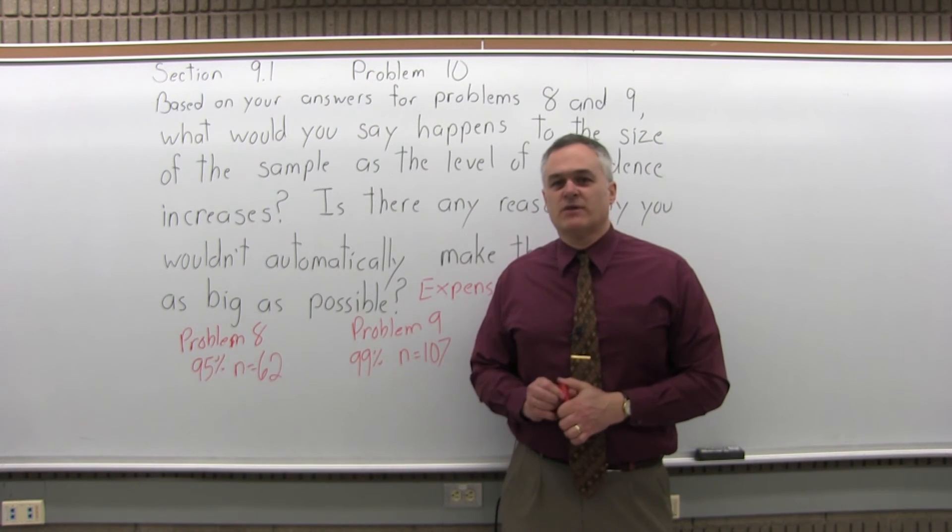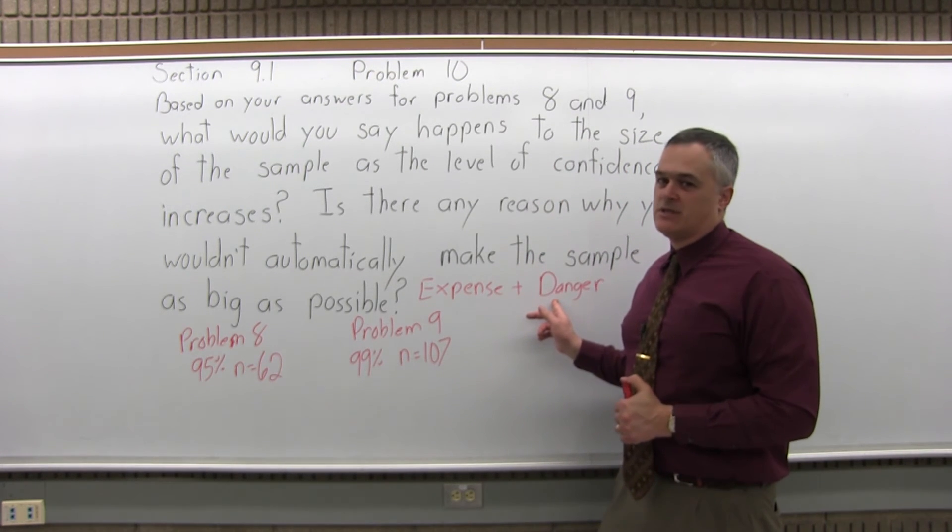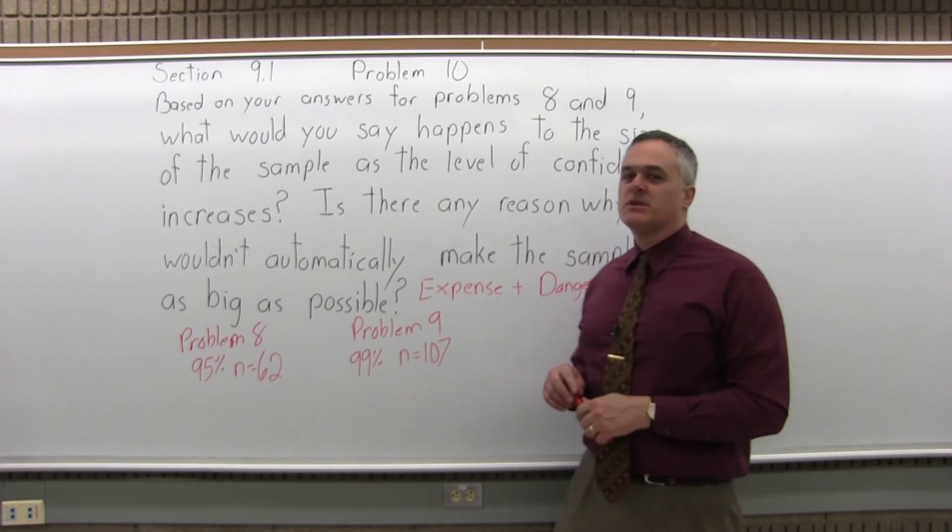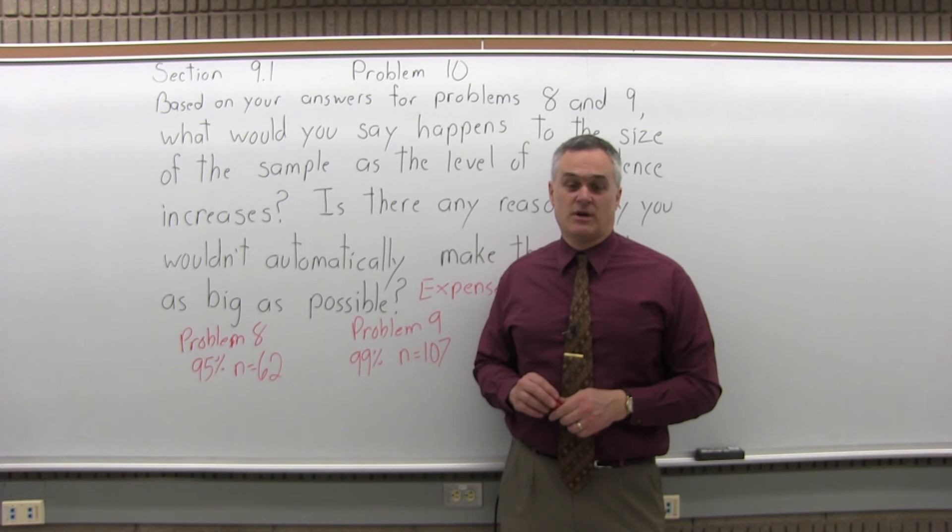Let's say you're tracking wildlife and you're tagging grizzly bears. Very dangerous. So if 10 grizzly bears is a big enough sample to give you the information that you need, 10 is a much better number than 12.